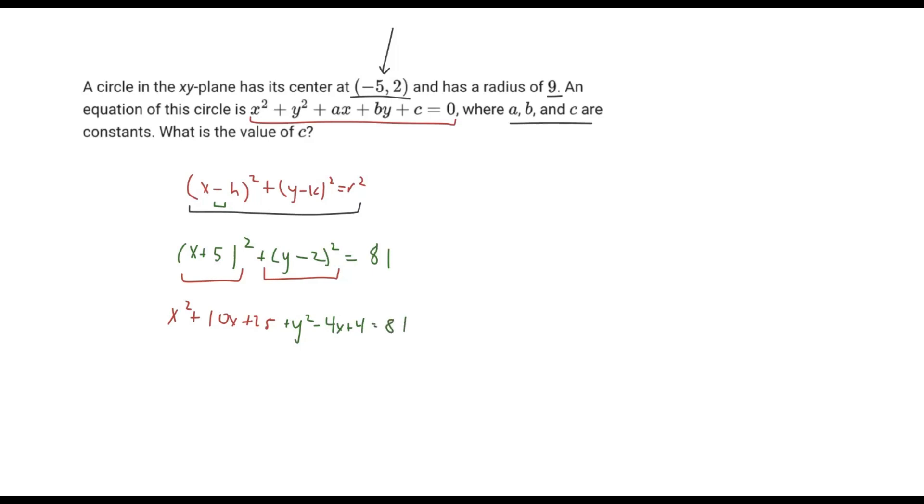What we're interested in seeing here is the c value. The c value is the constant, and it doesn't have the x or x² in front of it. Because of that, we can actually determine what it is, because on this side you can see it's 0, but on our side here is the value of 81. So what we need to do is subtract 81 on both sides.